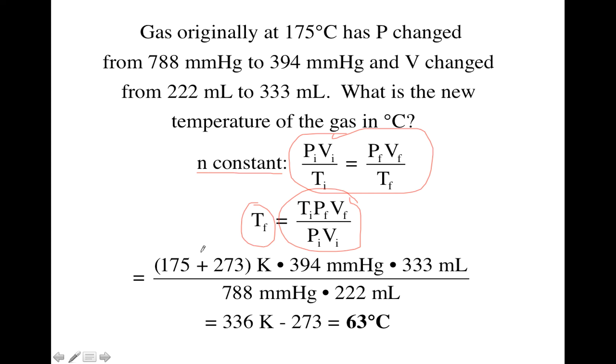So for initial temperature, they said 175 degrees C, but we need to change that to Kelvins by adding 273. But for the pressures and the volumes, we're going to actually leave those in the units that they were given in the problem. So the final pressure comes next, and the final volume, 333 milliliters, and then you divide by initial pressure was 788, and initial volume was 222.